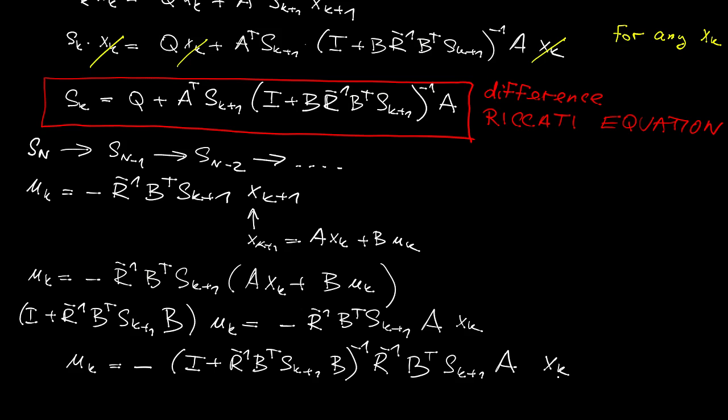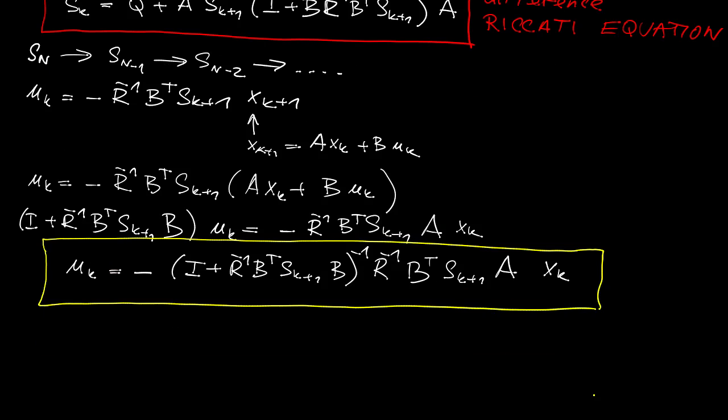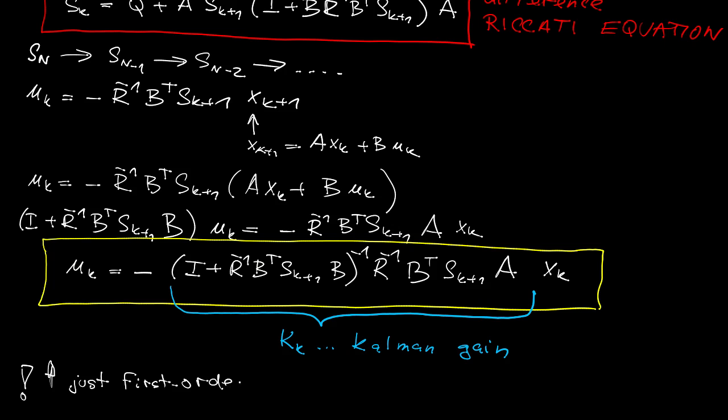This is truly a remarkable result because note that we have not made this assumption at the beginning. We did not say that we want to have state feedback and yet we have it. Now this messy expression here we will label it as K which evolves in time and it's called Kalman gain. Note that what we did so far was that we just analyzed the first order conditions so it's not yet clear if the controls that we have found in this way is actually minimizing but for the details I would direct you to the lecture notes and possibly some other literature.